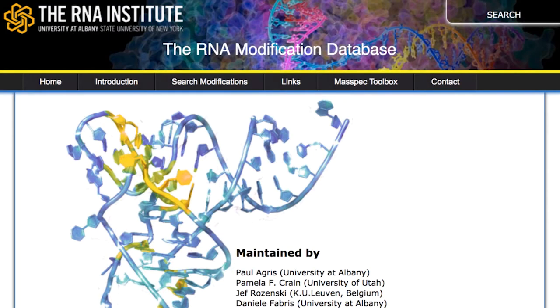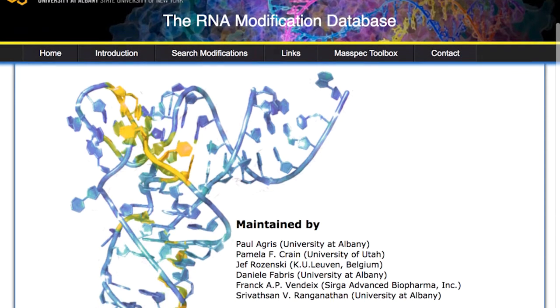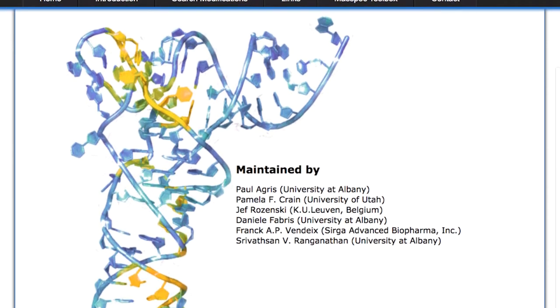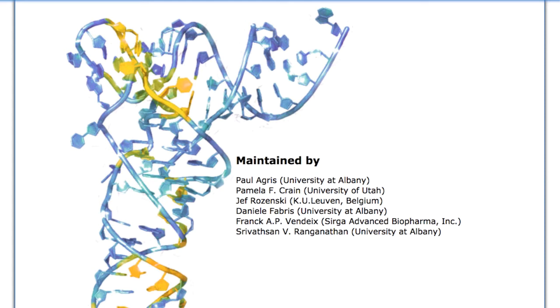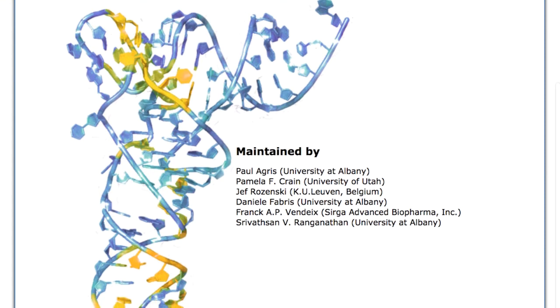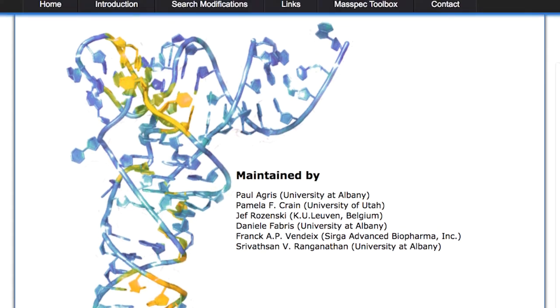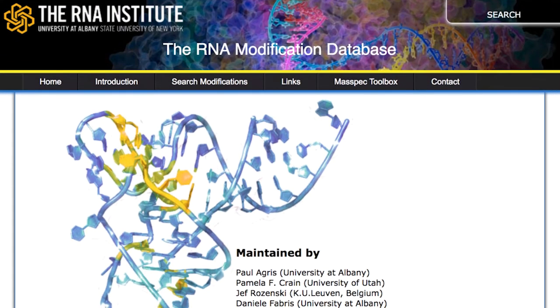Hi, I'm Tom Begley, Interim Director of the RNA Institute at the University of Albany, here to tell you about the RNA Modification Database, maintained and updated at the RNA Institute. The RNA Modification Database was started by Jim McCloskey, Pam Crain, and Jeff Rozenski many decades ago, and continued by Paul Agris when the RNA Institute opened in 2010. Currently, there are 112 chemically verified modified nucleosides in the database.